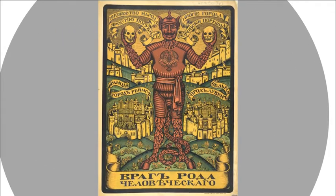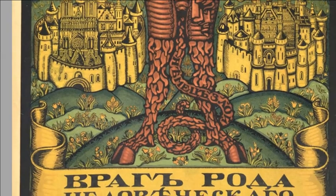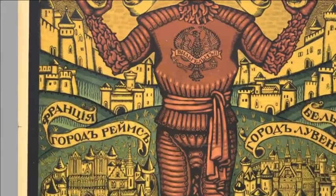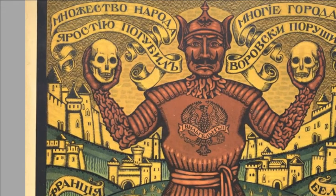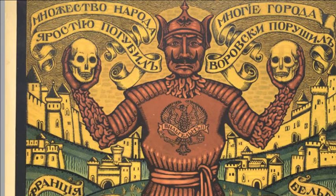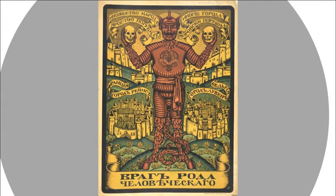A wonderful Russian piece demonizing the Kaiser — and I mean that very literally. He has the cloven hooves and the snaking tail of the devil, holding human skulls representing greed, brutishness, vileness, murdering, and coldness. They're trying to depict the Kaiser as a threat to Russia from the Germans. This is called 'the enemy of humankind.'